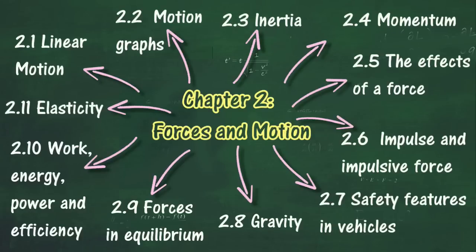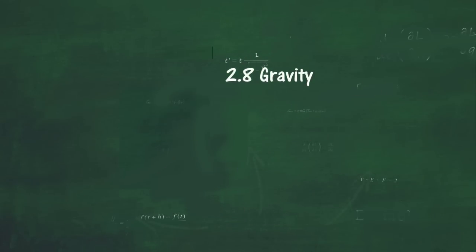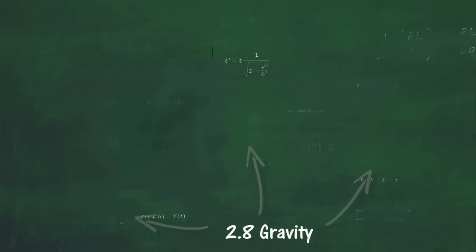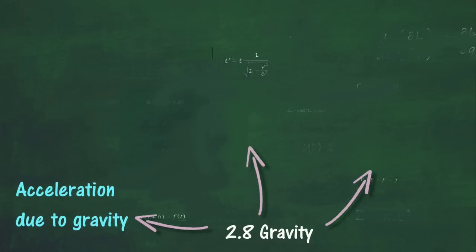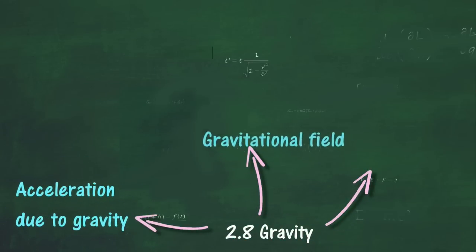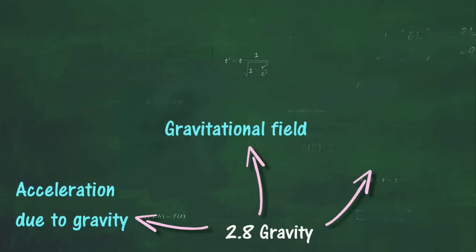In Section 2.8, we will learn about Gravity. At the end of this section, you should be able to: Explain acceleration due to gravity, Determine the value of acceleration due to gravity, State what a gravitational field is and Define gravitational field strength, Define weight as the product of mass and acceleration due to gravity, that is W = mg, and Solve problems involving acceleration due to gravity.